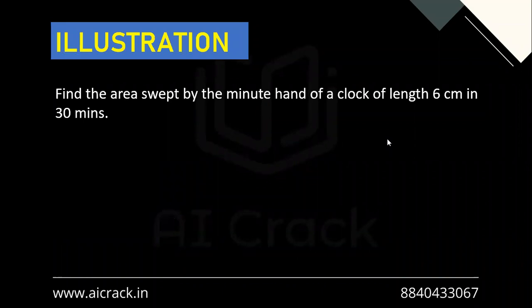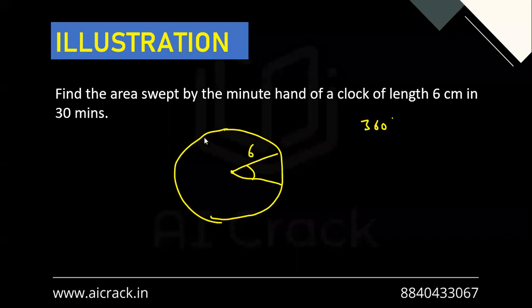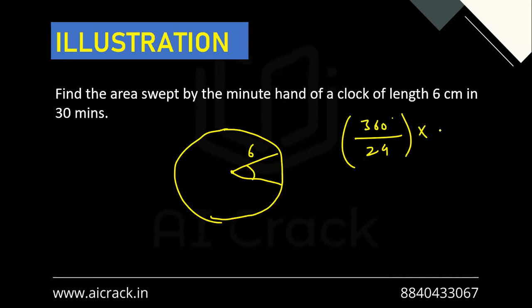Let's look at one example: find the area swept by a minute hand of a clock of length six centimeters in 30 minutes. There are 24 blocks of 30 minutes in a full 360 degrees, so the angle swept is 360 divided by 24 = 15 degrees. Converting to radians gives pi by 12. Using area equals one-half R squared theta, with R equal to six: area equals one-half times 36 times pi over 12. This is a standard question and you may get a more difficult version.